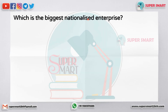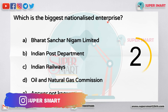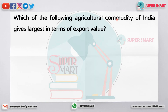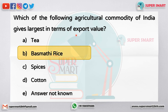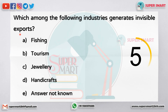Which is the biggest nationalized enterprise? The answer is Indian Railways. Which of the following agricultural commodities of India gives the largest in terms of export value? The answer is rice. Which among the following industries generates invisible exports? The answer is tourism.